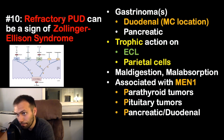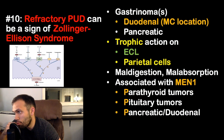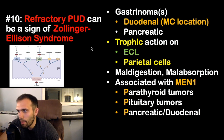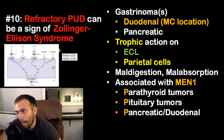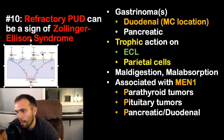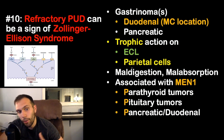Fact ten: refractory peptic ulcer disease can be a sign of Zollinger-Ellison syndrome. Gastrinomas — tumors releasing gastrin, most commonly in the duodenum or pancreas — cause unopposed gastrin release. Gastrin drives hypertrophy of enterochromaffin-like cells and parietal cells. Normally, somatostatin keeps gastrin in check, but a gastrinoma bypasses this. The result is extremely low intestinal pH, which inactivates pancreatic digestive enzymes, leading to maldigestion and malabsorption.